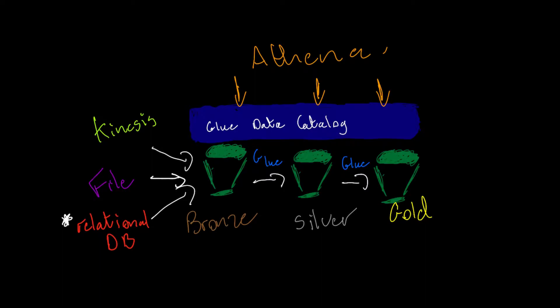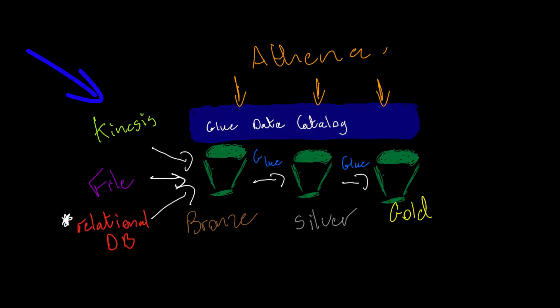We'll first ingest in batch format using a file, and we'll do that quite simply through the console. We'll then get more complicated where we'll use Kinesis to real-time stream into our bronze area and then transform that data, making it available for the business into silver and gold areas.